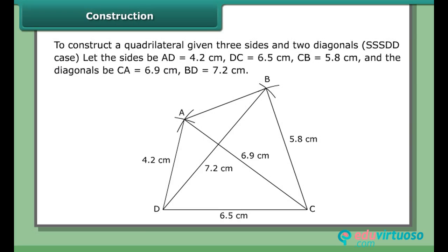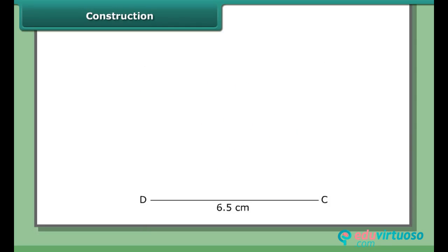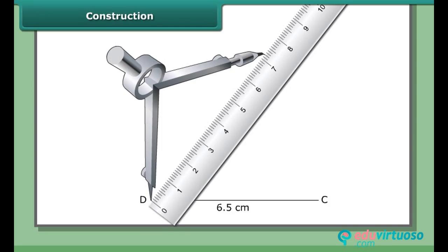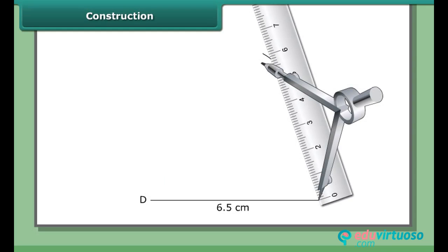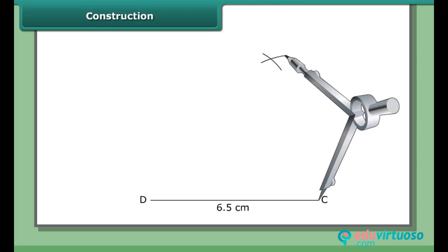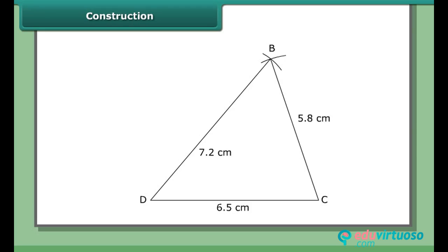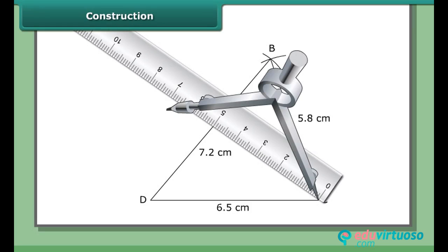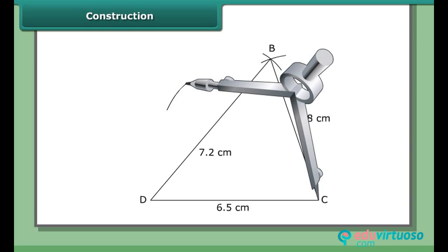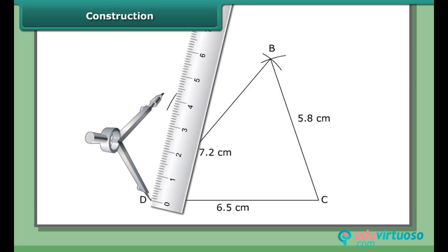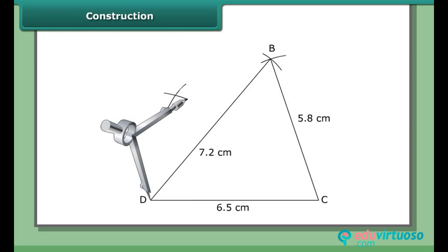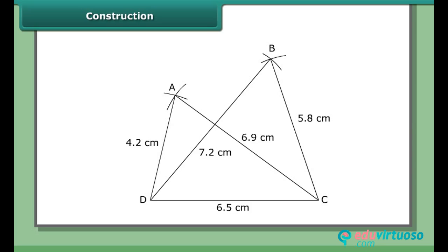Constructing BCD: draw DC = 6.5 cm. With D as center and radius 7.2 cm, draw an arc. With C as center and radius 5.8 cm, draw an arc to cut the previous arc at B. Join CB and DB. Constructing ACD: with C as center and radius 6.9 cm, draw an arc. On the same side of DC, with D as center and radius 4.2 cm, draw another arc to cut the previous arc at A. Join CA and DA. Join AB.